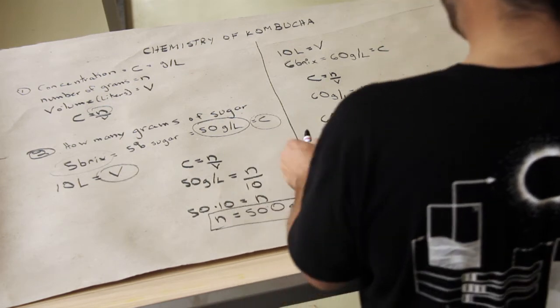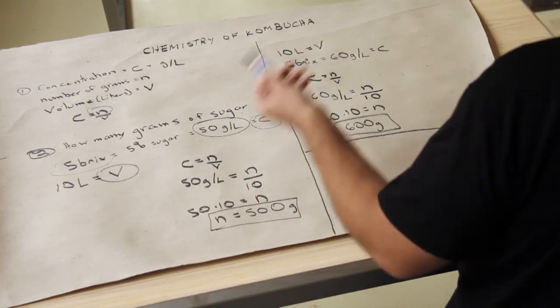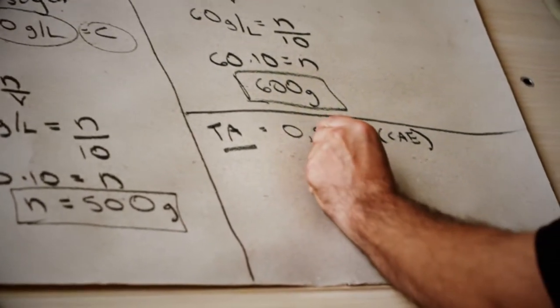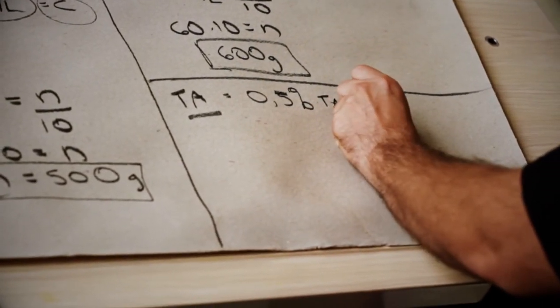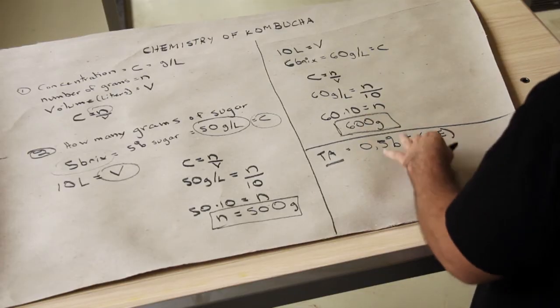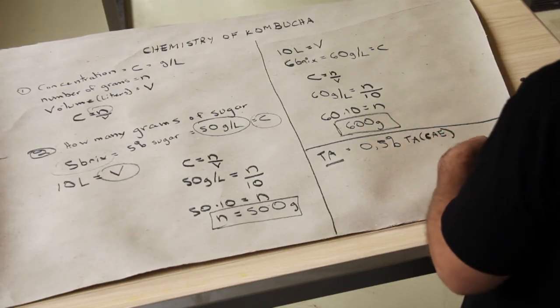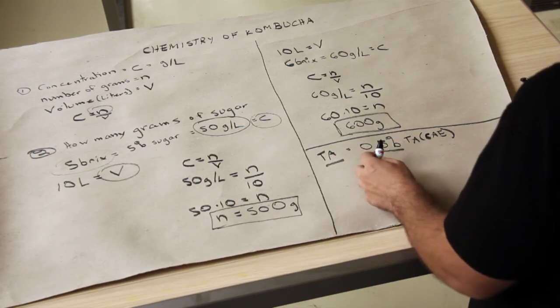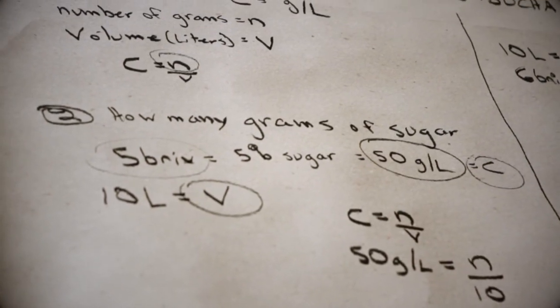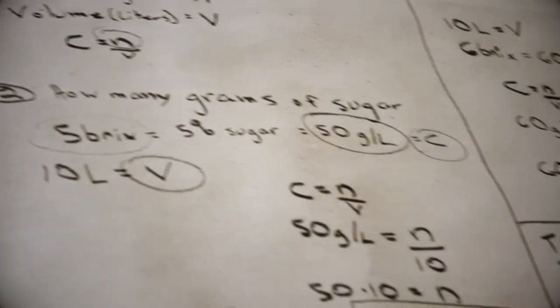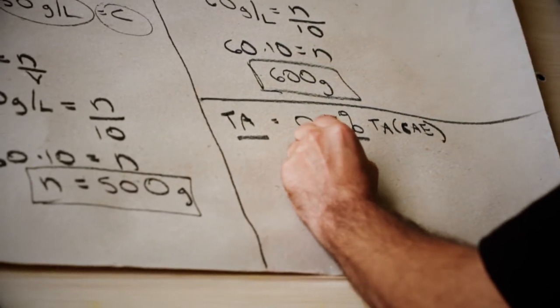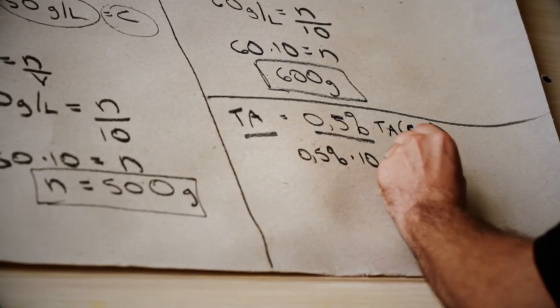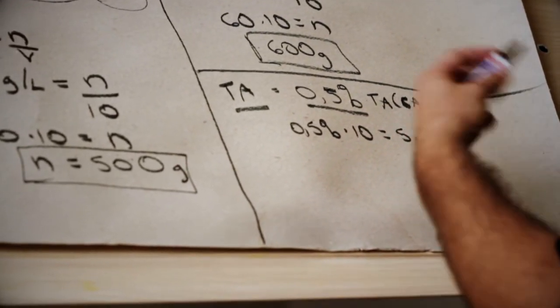Now what you can do is apply this to acidity as well. Titratable acidity is often given in percentage of titratable acidity in citric acid equivalents. So that just doesn't mean you have citric acid in the product, but it just means that it's a reference. So basically at 0.5%, if we look back over here, 5% sugar means 50 grams per liter. So if you want to go from percentage to grams per liter, you multiply by 10. So 0.5% times 10 equals 5 grams per liter.